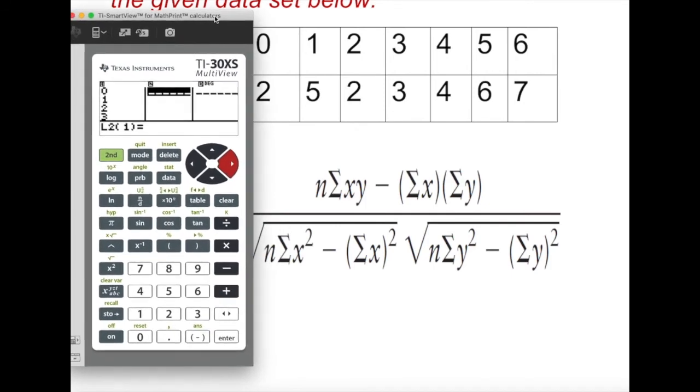So I'm going to put 2 enter, 5 enter, 2 enter, 3 enter, 4 enter, 6 enter, 7 enter. Look, I have all this data. You can go up and down to see all the data.